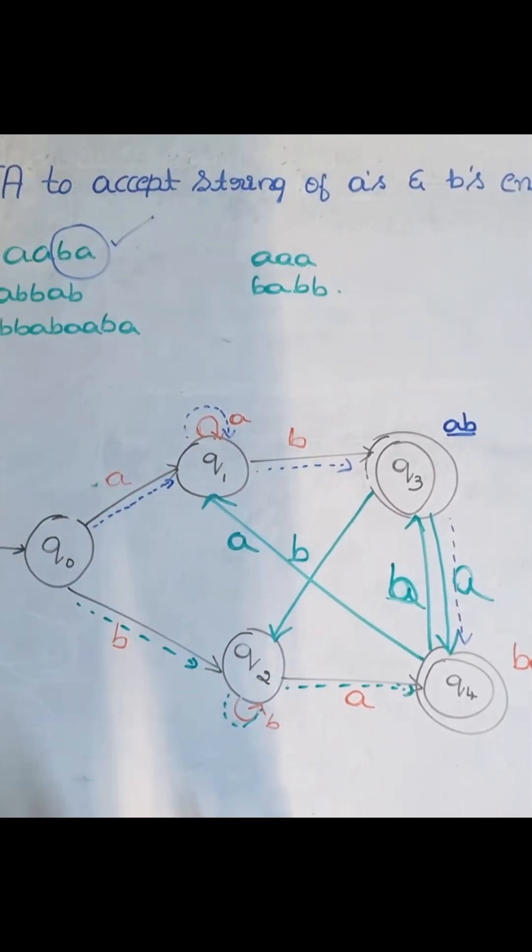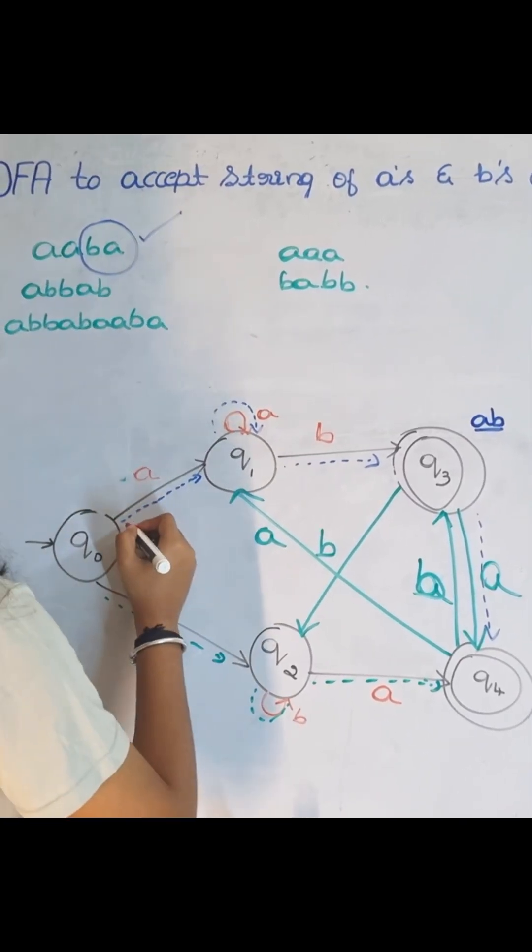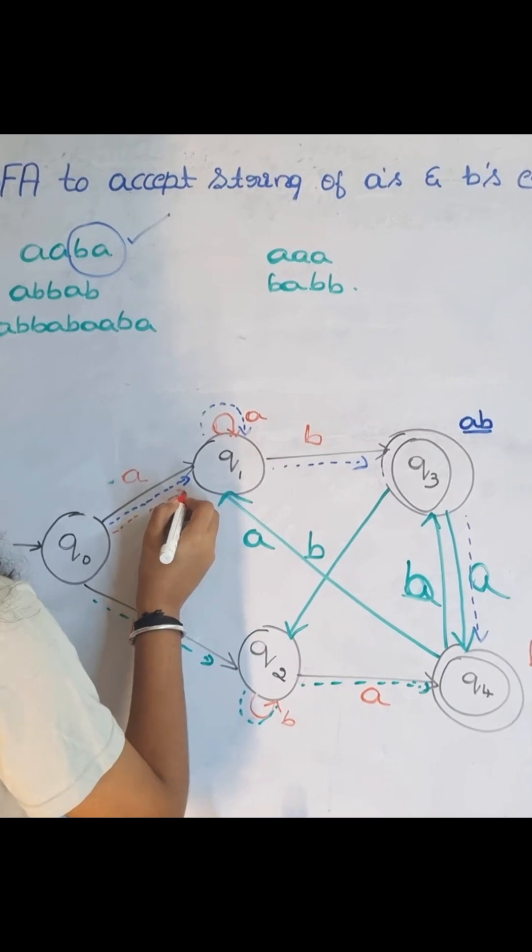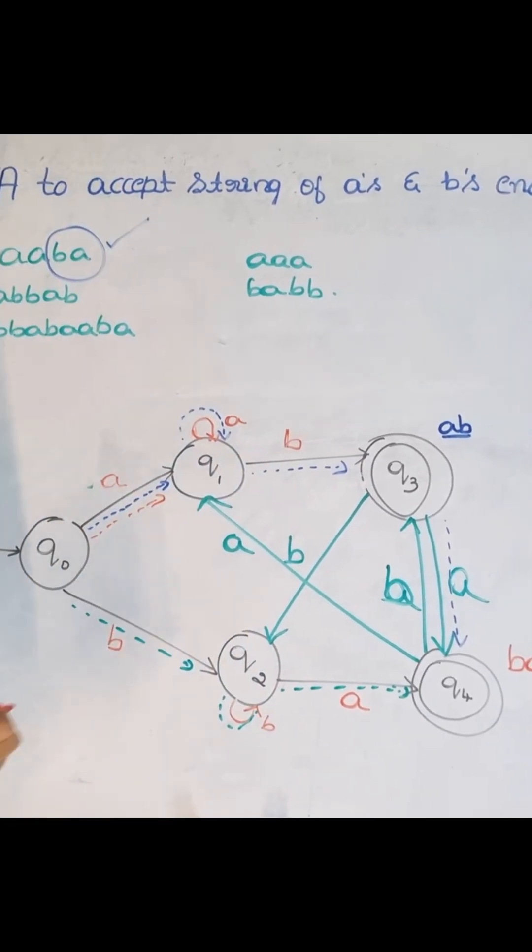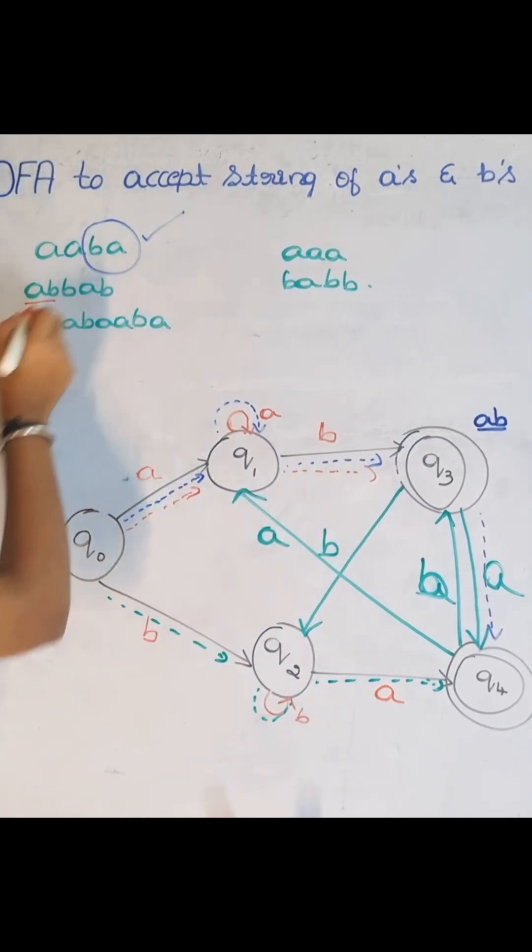Now I have A, B, B, A, B. So I got A moving here and I got B. I am moving, these two are done, to Q3.